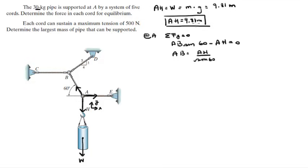But we know AH to be 9.81 times the mass. So 9.81 divided by the sine of 60 gives you 11.32 M. So AB is equal to 11.32 times the mass.